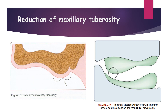The next hard tissue procedure is reduction of maxillary tuberosity. The picture shows an oversized maxillary tuberosity and a prominent tuberosity that interferes with inter-arch space, denture extension, and mandibular movements. A pendulous tuberosity with undercuts may be encountered unilaterally or bilaterally. Surgical correction is required if it interferes with normal denture function, and bilateral undercuts require surgical contouring on at least one side.